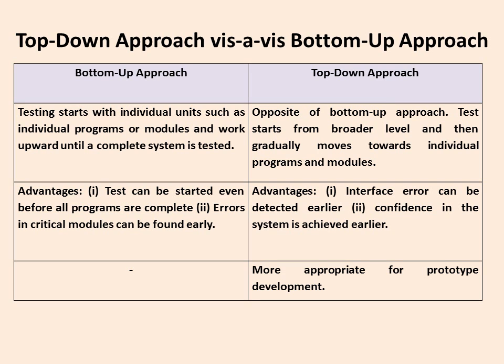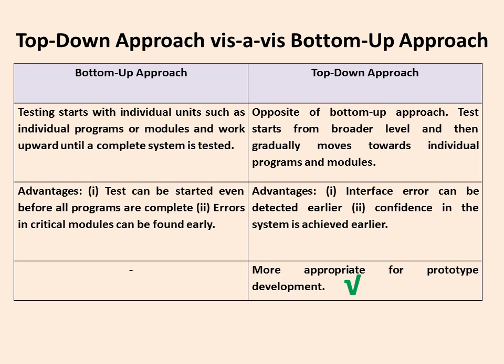The difference between top-down and bottom-up approaches: In bottom-up, testing starts with individual units and gradually the full system is tested. In top-down, the broader system is tested first and then gradually individual programs or modules are tested. The advantage of bottom-up is that testing can start even if all programs are not completed, and errors in critical modules can be found early. In top-down, interface or integration errors can be detected earlier and confidence in the system is achieved earlier. Top-down is more appropriate for prototype development, as a prototype is a sample or model of software, and testing from a broader level gives confidence at an earlier stage.